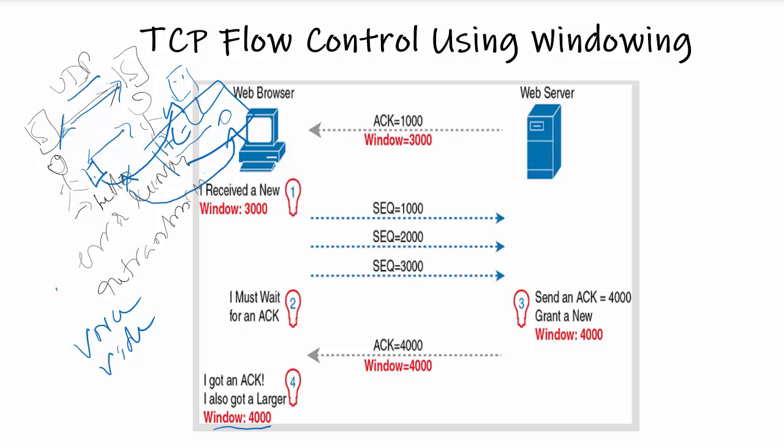That is the reason UDP doesn't have a retransmission or error correction process like TCP. Another application that uses UDP is DNS — DNS uses UDP because the user will simply retry an operation if the DNS resolution fails. Another example is Network File System (NFS), a remote file system application that performs recovery with application layer code, so UDP features are applicable where error recovery or retransmission is not required at the transport layer. I hope you've understood the concept of flow control using the windowing process, where both the sender and receiver agree upon the window size.